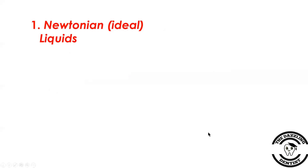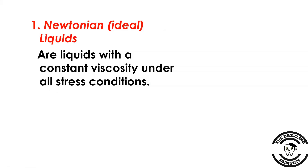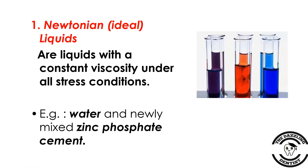First is Newtonian or ideal liquids. These are liquids which have a constant viscosity under all stress conditions — whatever the condition, their viscosity remains constant. Examples are water and newly mixed zinc phosphate cement.